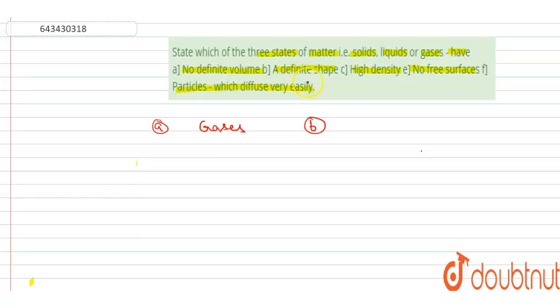So in B part it is given a definite shape. So solid have definite volume and definite shape. Now we move on third part which is C.